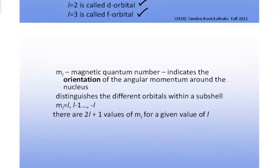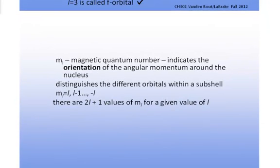The M sub L magnetic quantum number indicates the orientation of the subshells around the nucleus. These values of M sub L are dependent on the value of L and vary from the value, the numerical value of L, down to and through 0, to the numerical value negative L.